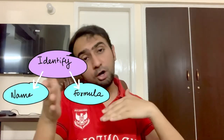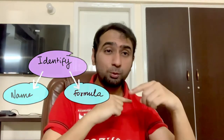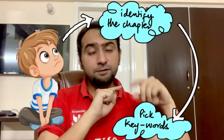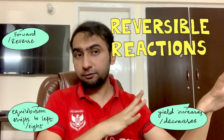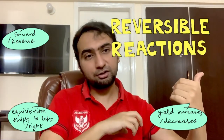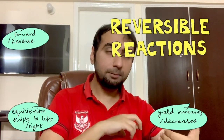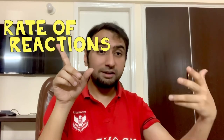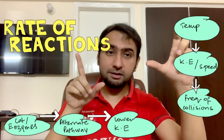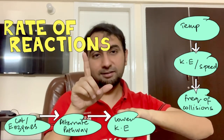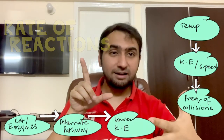Another thing that can improve your score is understanding which chapter a question is coming from. If it's from reversible reactions, use keywords like forward reaction, reverse reaction, equilibrium shifts to the right or left, yield increases or decreases. If it's from rate of reaction, use keywords like kinetic energy, speed of particles, frequent or less frequent collisions, activation energy, and alternative pathway. If it's from organic chemistry, talk about functional groups, homologous series, and forces.